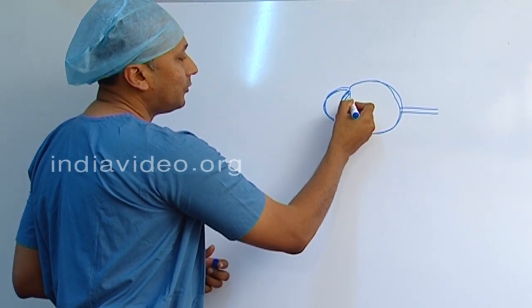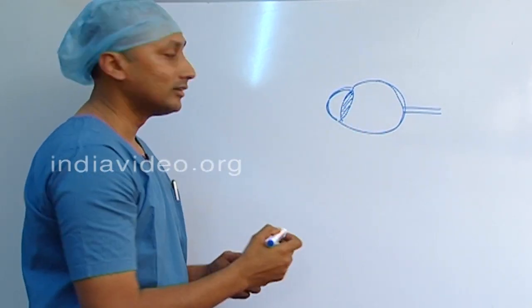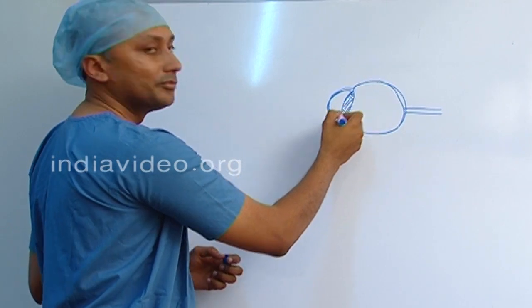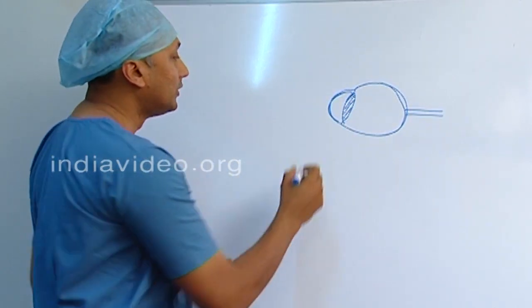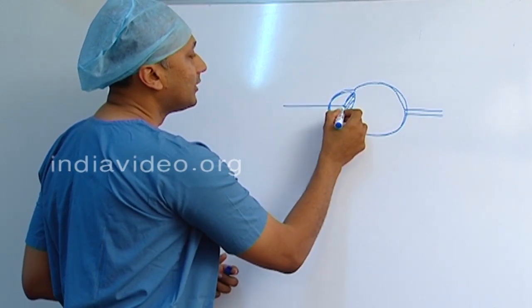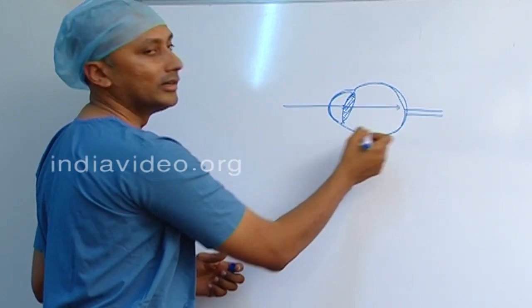If the lens is cloudy, what happens in old age usually, the lens color changes, becomes yellow in color and it is not transparent anymore. So if a light ray enters the eye, it does not fall very clearly on the retina.